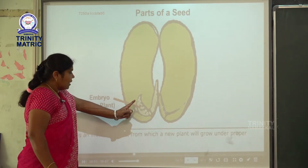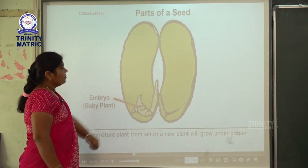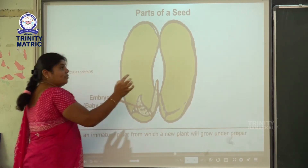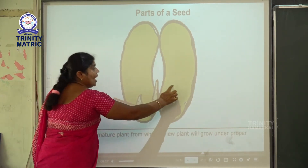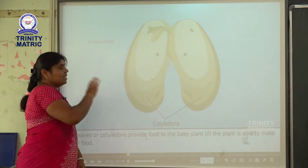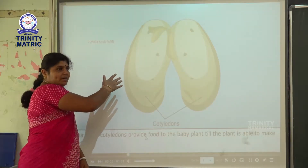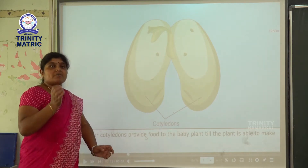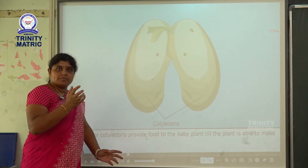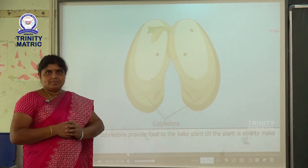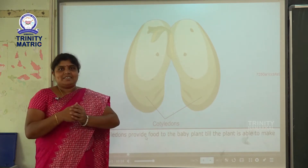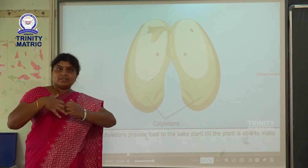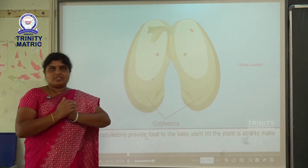Have you seen a seed before? The seed has three parts. First one is embryo, second one is seed coat, and third one is endosperm. The seed contains three parts: first one is seed coat. What is the purpose of the seed coat? For example, in winter season all humans wear woolen clothes — why do we wear woolen clothes?